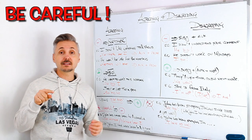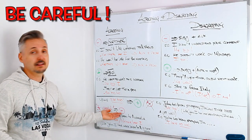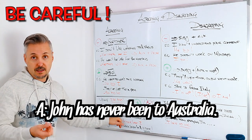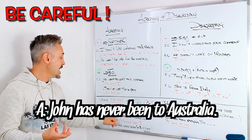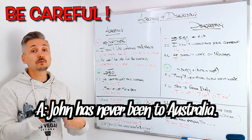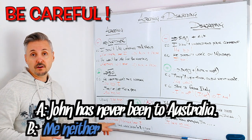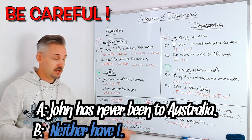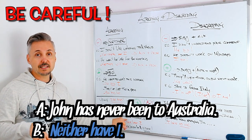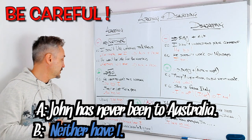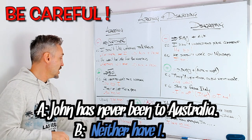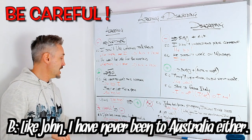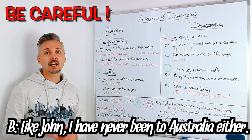Be careful when the sentence is negative. For example: 'John has never been to Australia' — 'never' is the negative part. You would answer 'me neither' or 'neither have I', using the same auxiliary 'have.' Or you can say 'Like John, I have never been to Australia either' — using 'either' at the end.